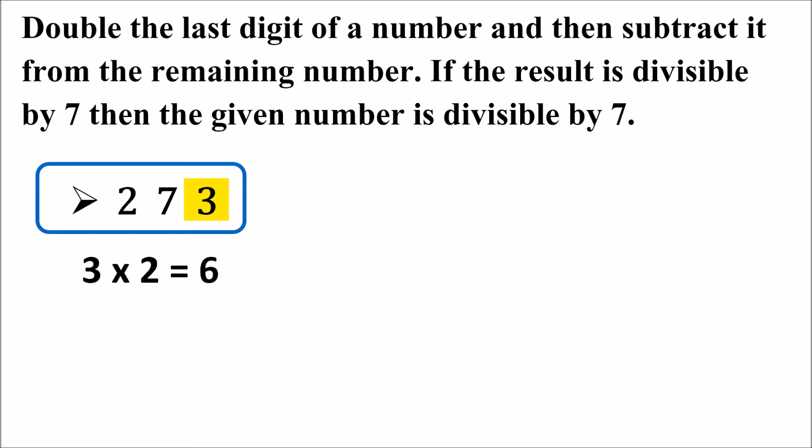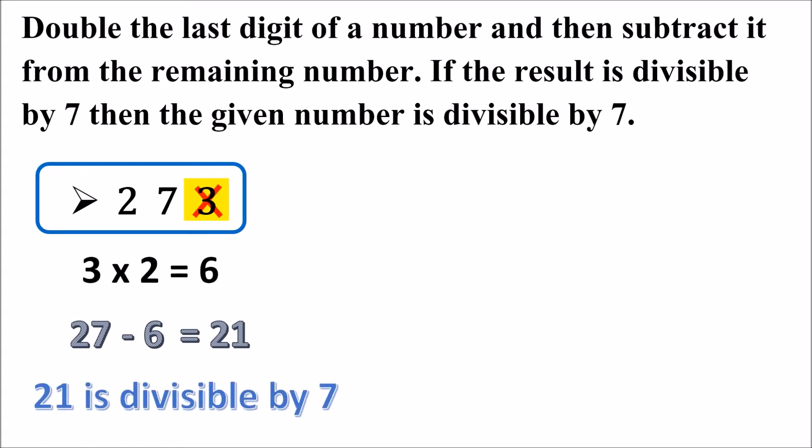Now we will subtract 6 from the remaining number of the given number. If I take out 3, what is left? 27. So 27 minus 6 is 21. Is 21 divisible by 7? Yes, 21 is divisible by 7 — 7 times 3 is 21. So the given number is divisible by 7.